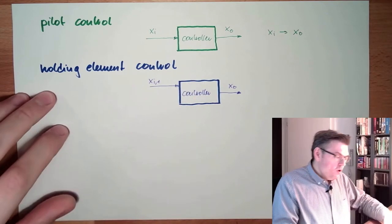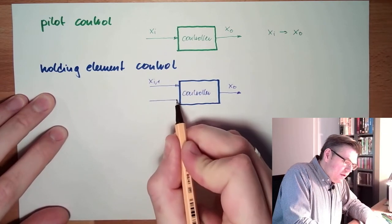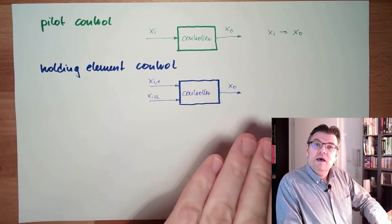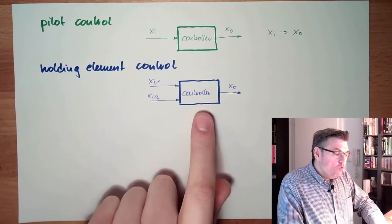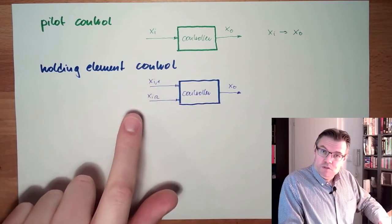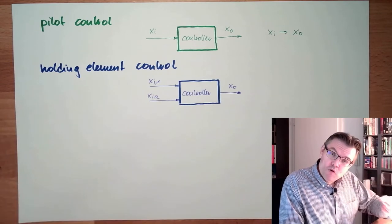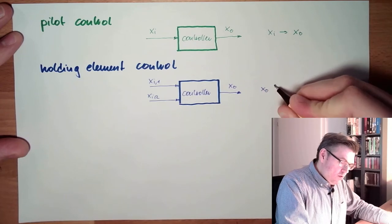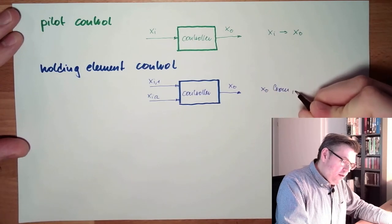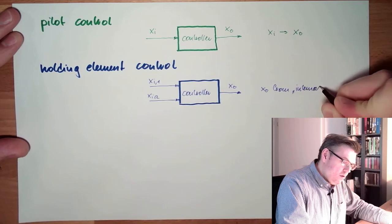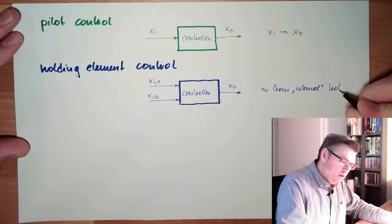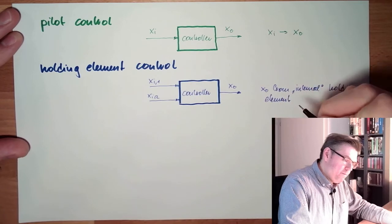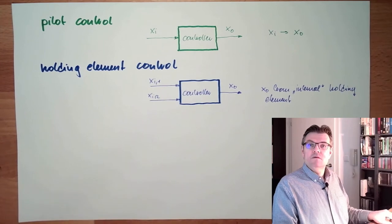And then maybe a second input will switch the controller to a second state. And the output is, again, so the controller is holding the information from the inputs. This is a holding element. It's stored in there somehow. So XO from internal holding element. This is already a little bit more complex control type. I need to at least store something inside.